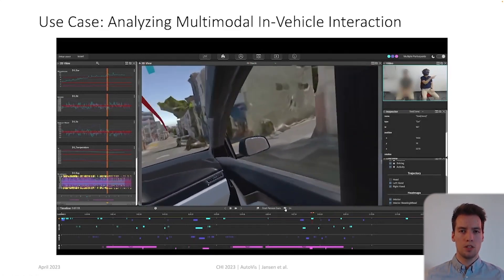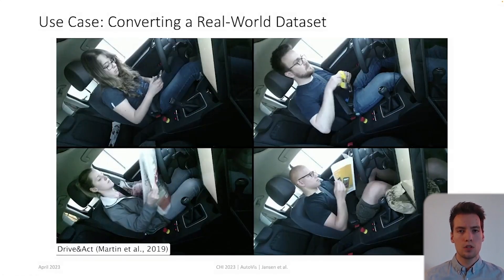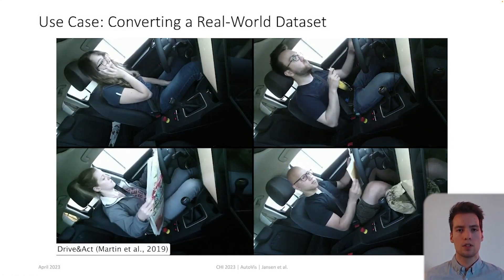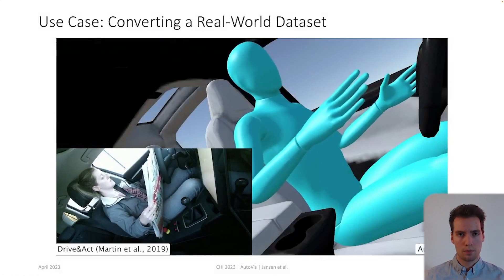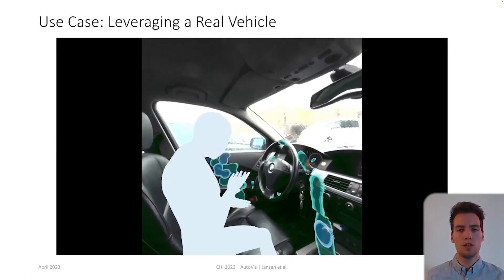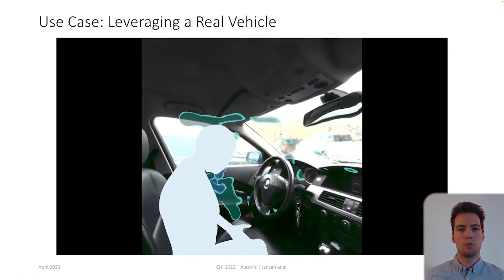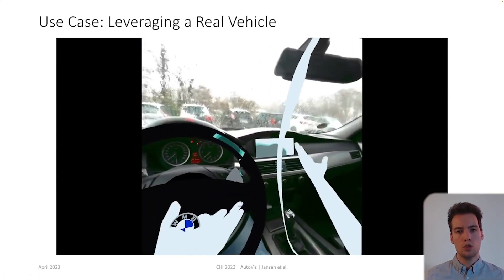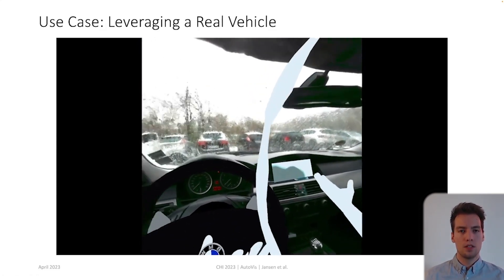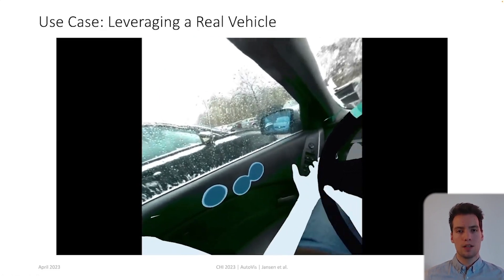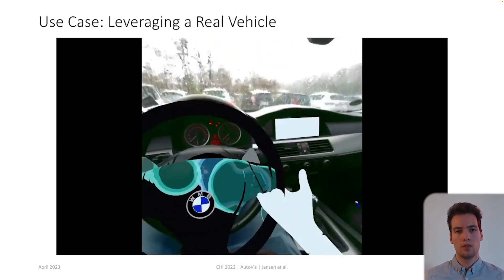The environment heatmaps also reveal that participants interacted with an unexpected cyclist. In our second use case, we demonstrate how AutoViz converts and visualizes real-world datasets using Drive and Act, a dataset for driver activity recognition captured in manual and autonomous driving. In AutoViz, analysts can perceive the automatically recognized body positions and movements during driver activities from any point of view. In our third use case, we demonstrate how AutoViz integrates a real vehicle into the analysis. We recorded an exemplary dataset in a BMW to analyze a novel UI concept for air-conditioning control specific to the driver's seat from the driver's point of view using pass-through VR. The analysts discovered that participants primarily interacted with the center console instead of the door where the novel UI was located, and found a mismatch between the door button layout of the real vehicle and the simulator vehicle used in the study.